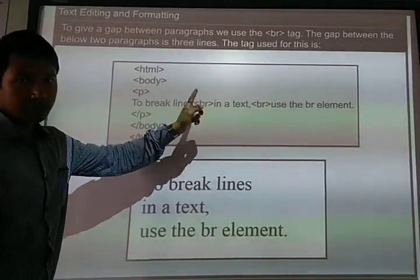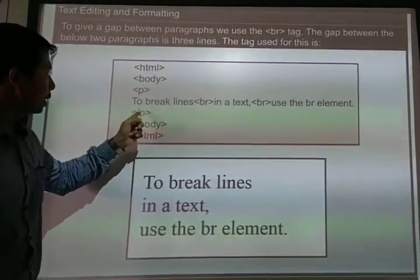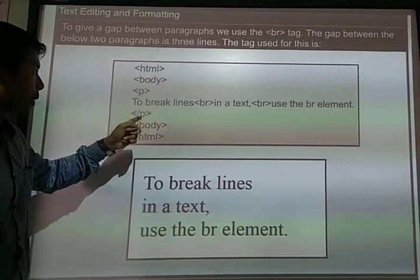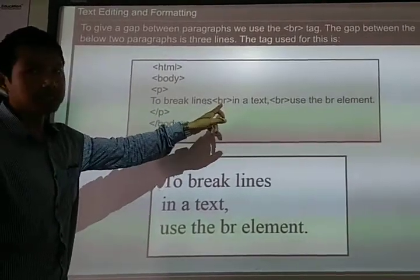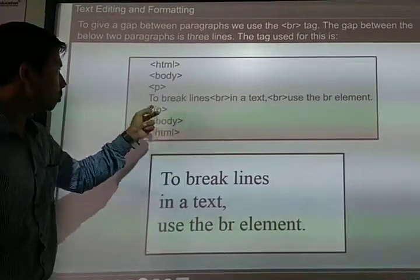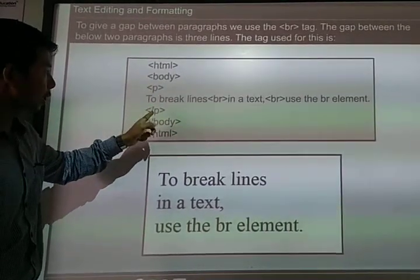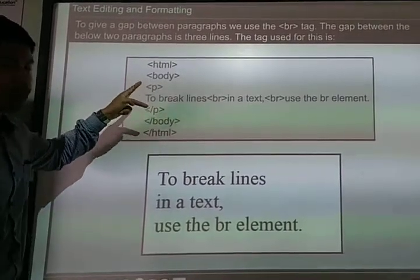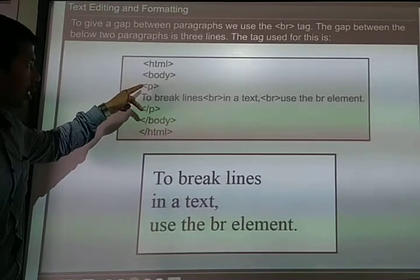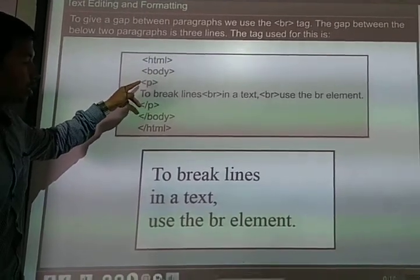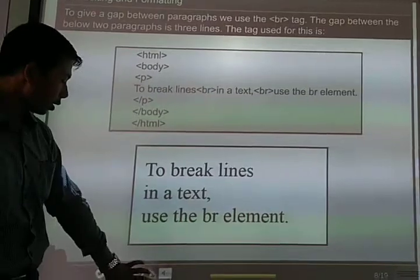BR is an empty element and P is a container element. Empty element has only a starting tag and P here we have a starting tag and an ending tag. Therefore, it is a container tag.